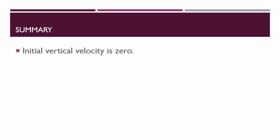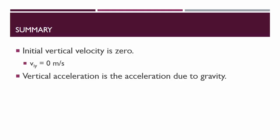In summary, the initial vertical velocity of a horizontal projectile is zero. VIY equals zero meters per second. The vertical acceleration is the acceleration due to gravity. So AY equals 9.81 meters per second squared downward. The horizontal acceleration is zero, so AX equals zero meters per second squared.